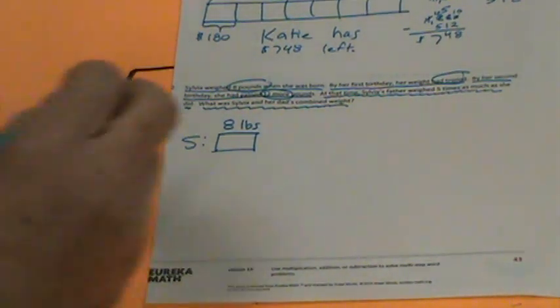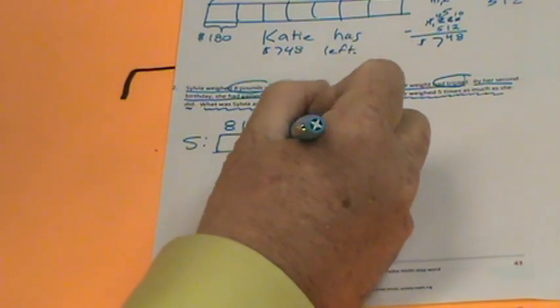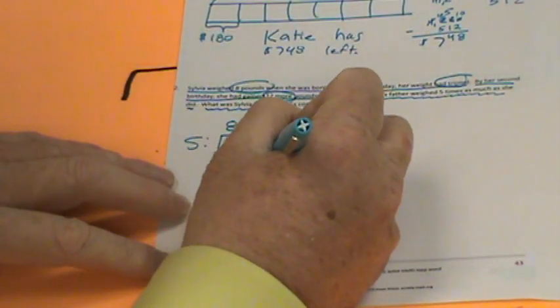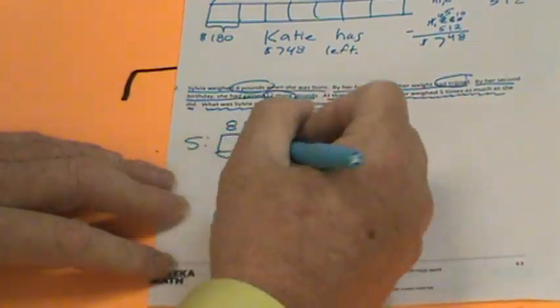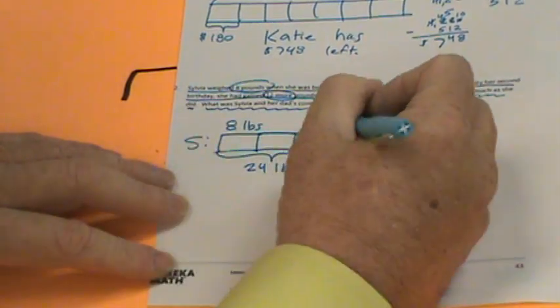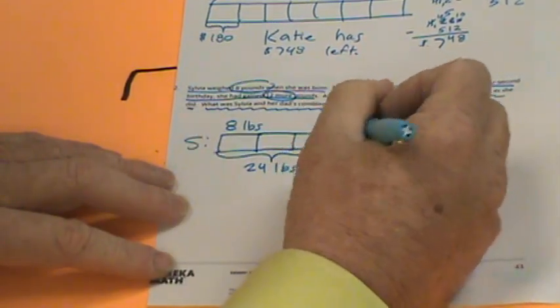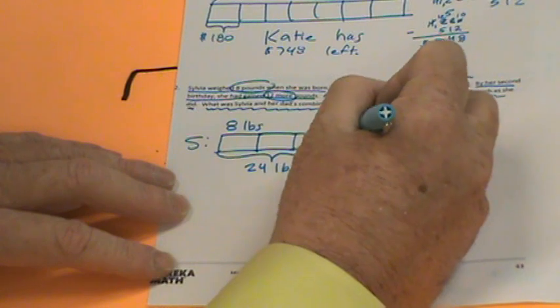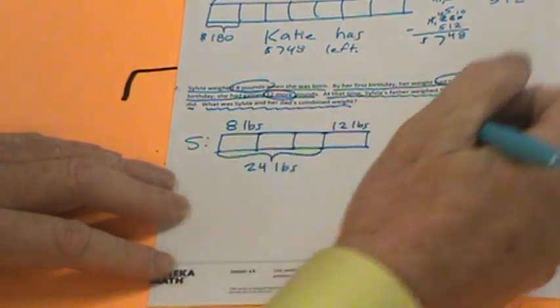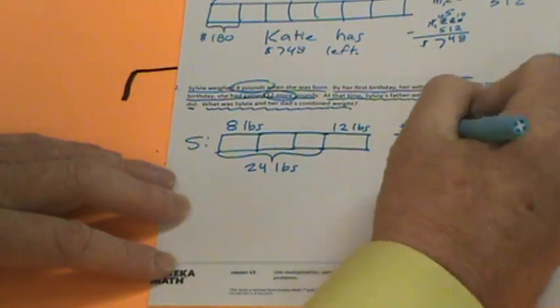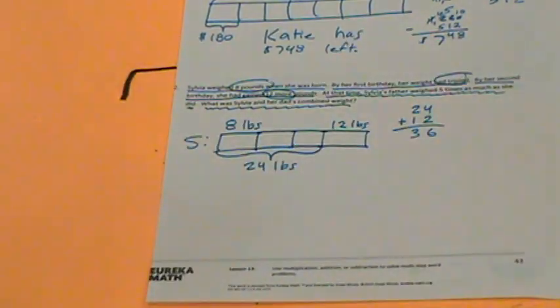So by her first birthday, her weight had tripled — one, two, and three. What's her weight on the first birthday? What's eight times three? Eight, 16, 24. So she weighs 24 pounds on her first birthday. By her second birthday, she'd gained 12 more pounds, so we need to add 12 onto this. 24 plus 12: four plus two is six, and two plus one is three. So Sylvia weighs 36 pounds.